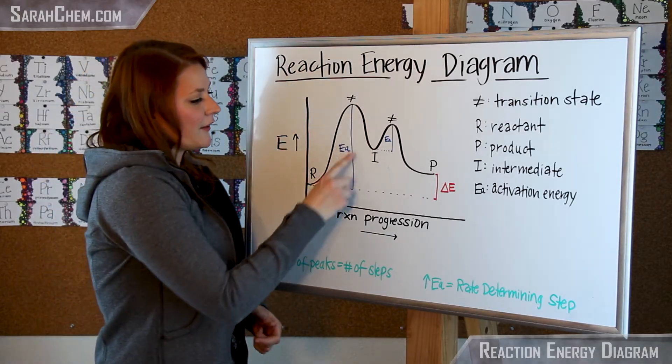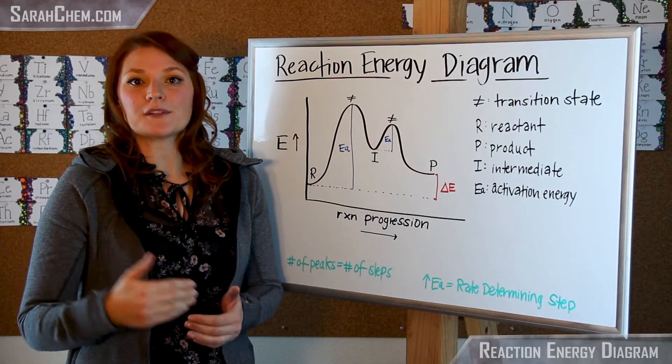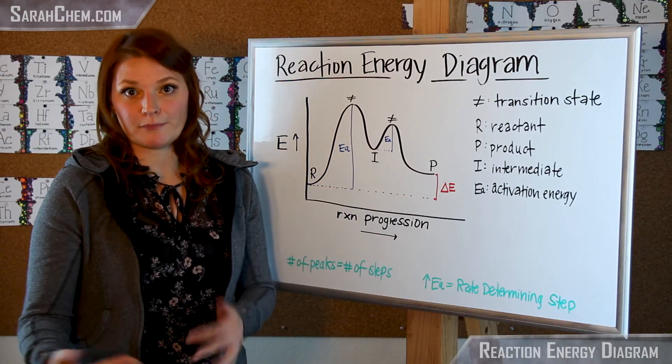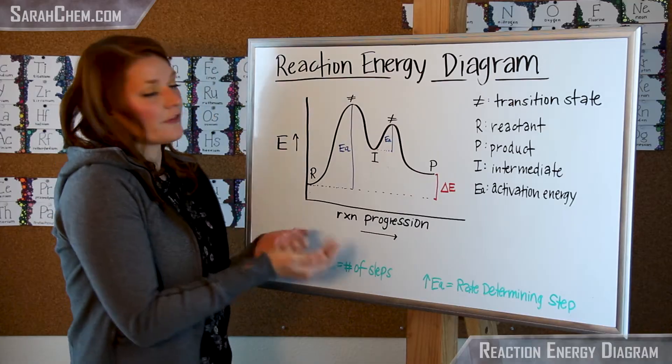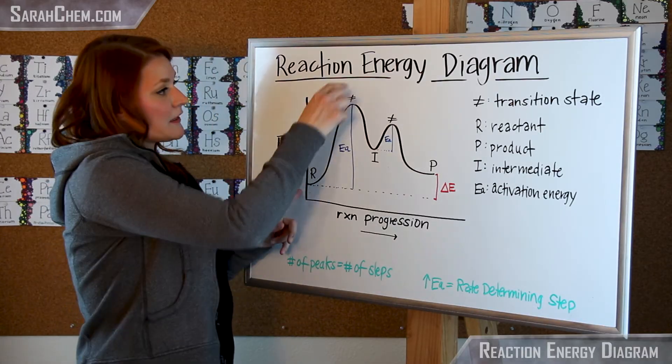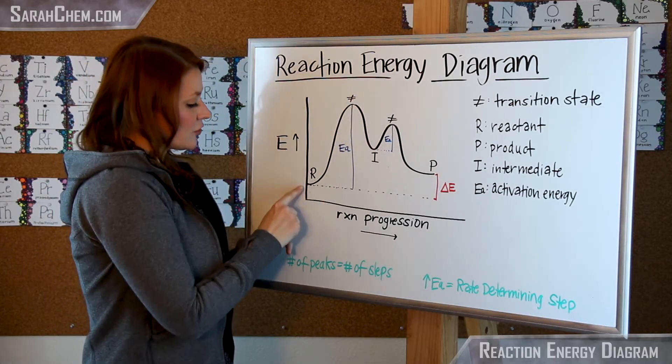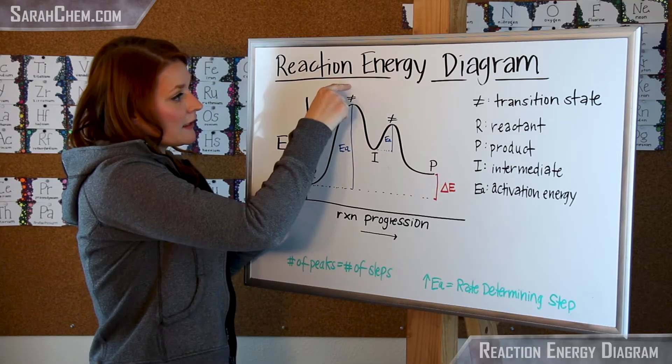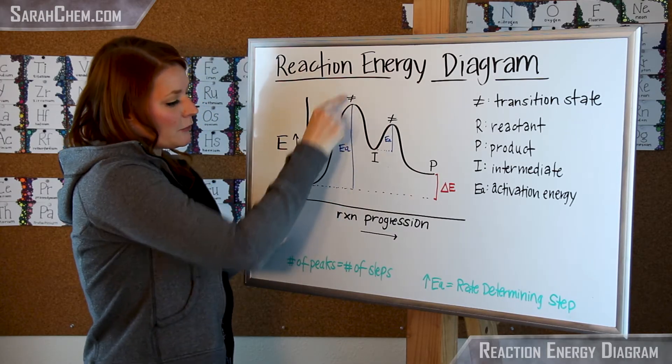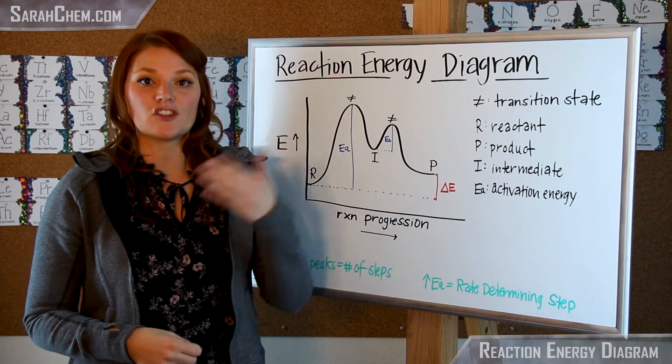The next thing you'll notice here is this Ea. Ea represents the activation energy barrier. Essentially that's going to be taking from the energy level of the preceding species up to the peak of the next transition state. So here it's the energy of R to the peak, the difference in energy between those two, that's the activation energy barrier.